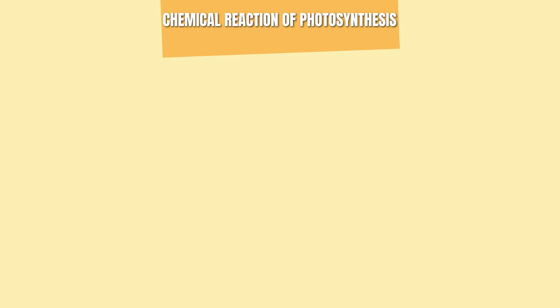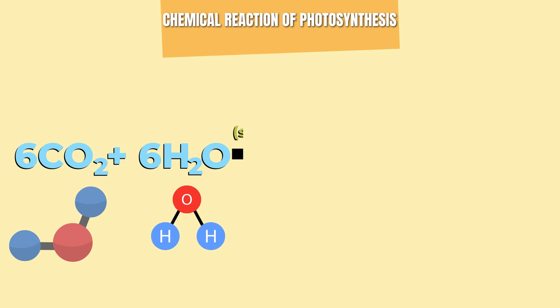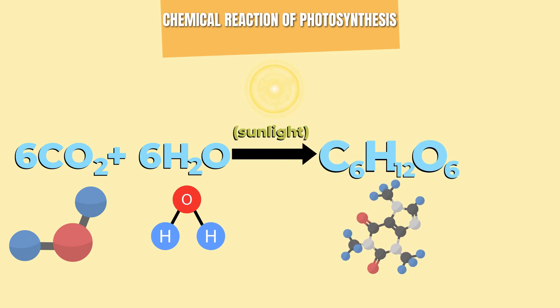The chemical reaction of photosynthesis involves six carbon dioxide molecules and six water molecules, along with the help of sunlight, to produce one glucose molecule and six oxygen molecules.